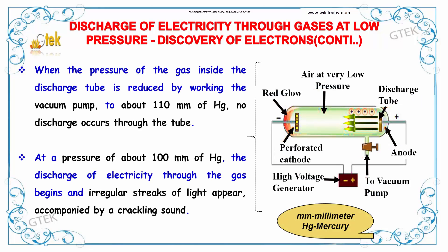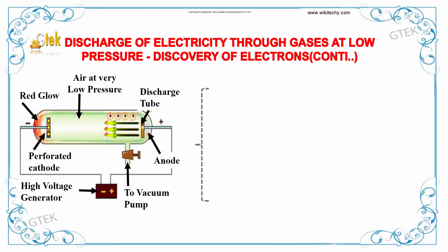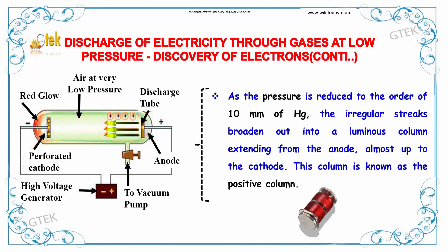When the pressure of gas inside the discharge tube is reduced by the vacuum pump to about 110 mmHg, no discharge occurs through the tube. At a pressure of about 100 mmHg, the discharge of electricity through the gas begins, and irregular streaks of light appear accompanied by a crackling sound. As the pressure is reduced to 10 mmHg, the irregular streaks broaden into a luminous column extending from the anode almost to the cathode, called the positive column.